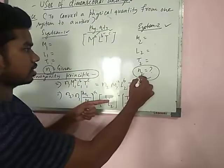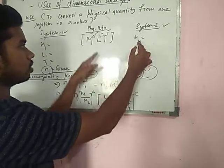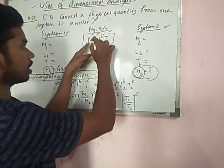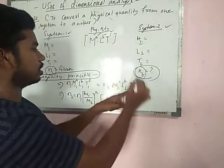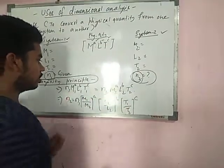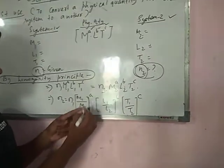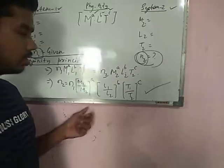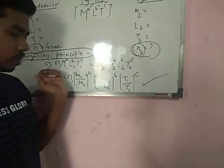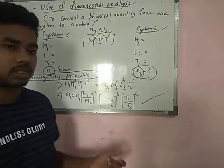On the right side, for system two, we have to find N₂. N₂ equals N₁ times (M₁/M₂)ᴬ times (L₁/L₂)ᴮ times (T₁/T₂)ᶜ. Using this formula, we can transfer the physical quantity from one system to another.